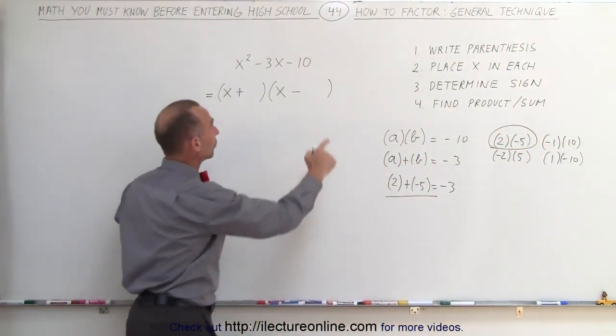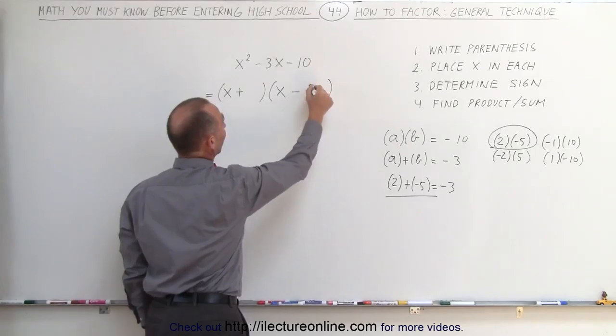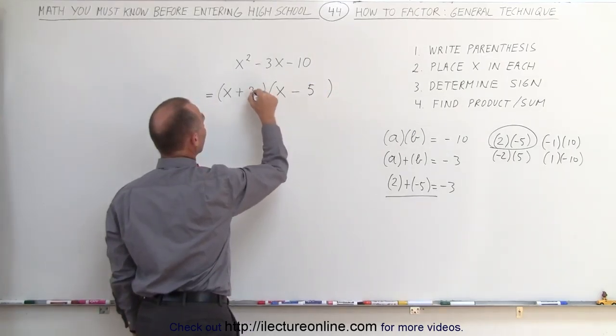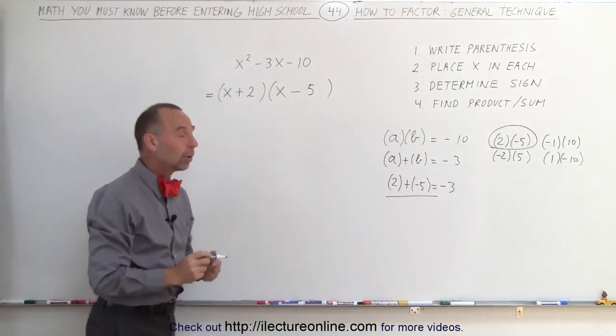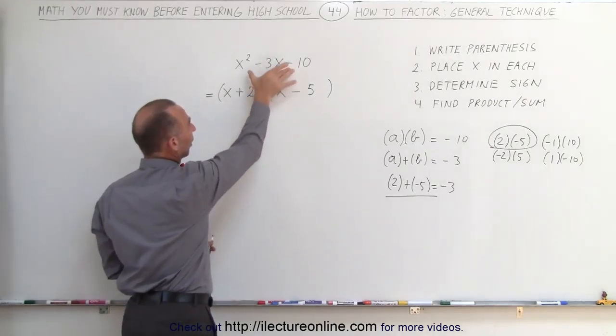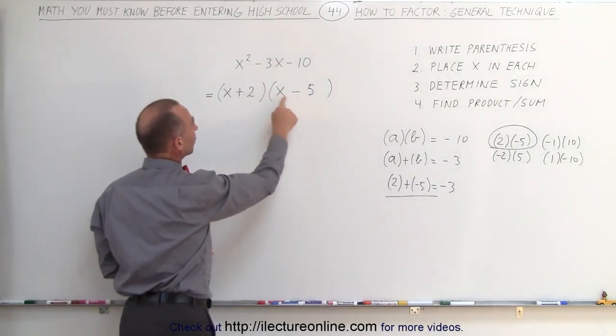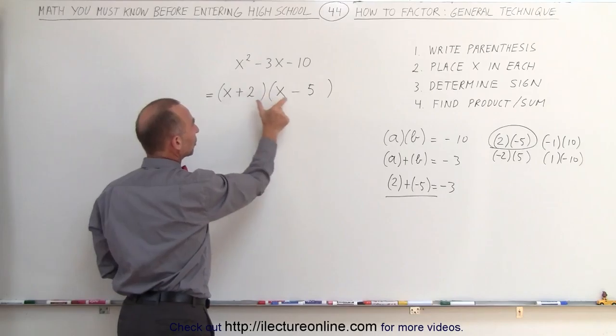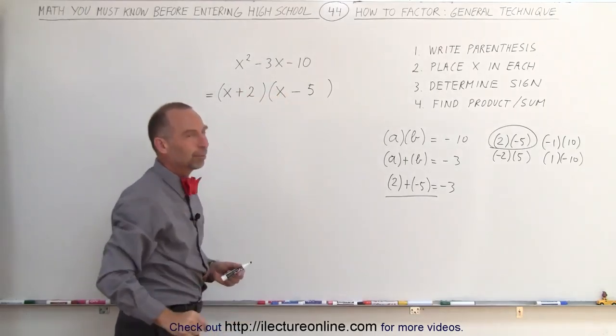What you do then is you put the 5 over here to get a negative 5, and you put the 2 over there to get the positive 2. This is what we call the factored form of this trinomial. It's a product of two binomials. There's a binomial, there's a binomial, and we're multiplying them together.